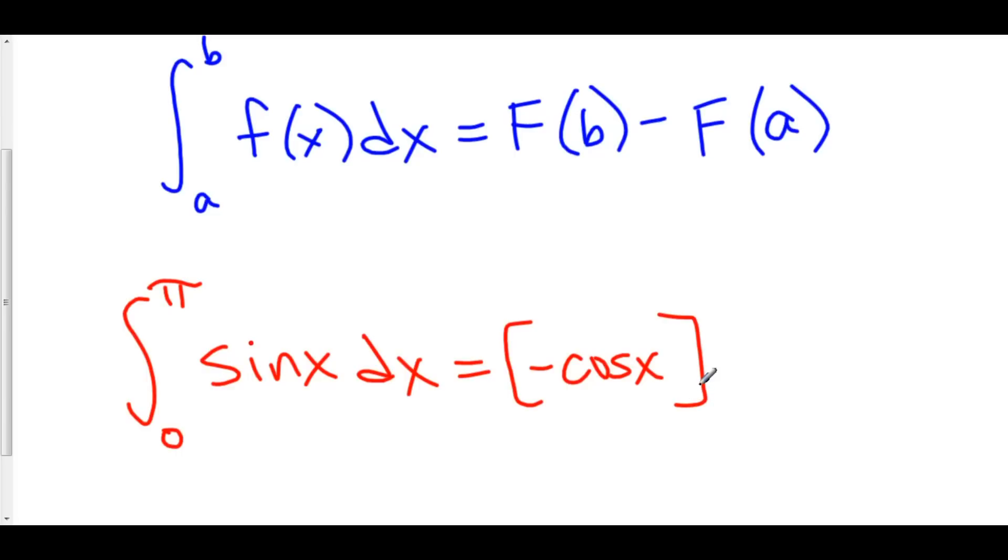Negative cos of x, when you take the derivative, gives you negative negative sin of x, which is positive sin of x.